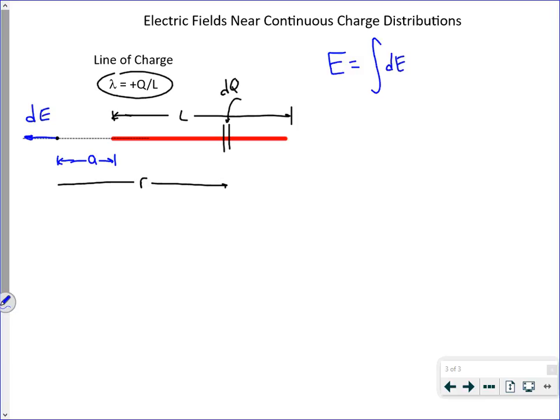And we're going to write that as each little dE is K times the little dQ at its location. So this turns into K dQ over R squared.